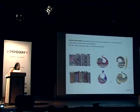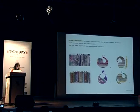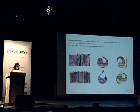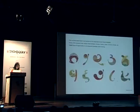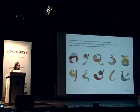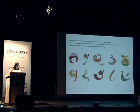Rabari embroidery patterns and styles are a source of inspiration for this set of alphabets. The famous Gujarati cuisine is an inspiration for the numbers from 0 to 9.